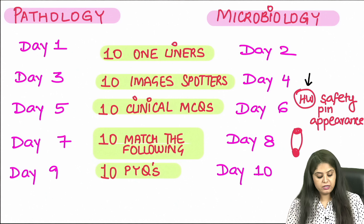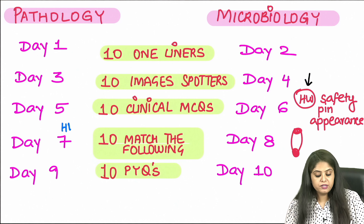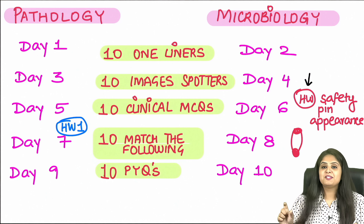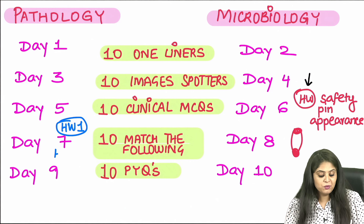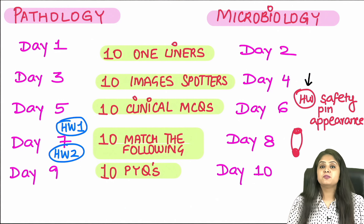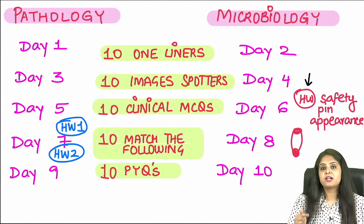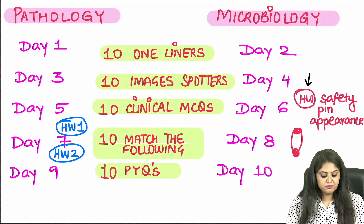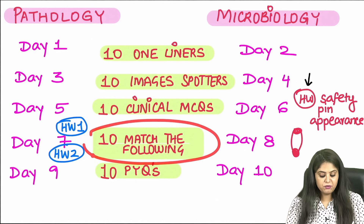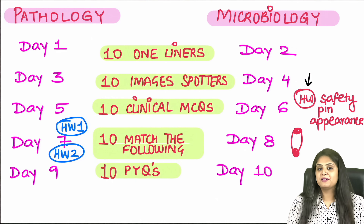Your two homeworks: first, tell me the row-of-tombstones appearance seen in pemphigus vulgaris and the similar appearance seen in a type of necrosis in general pathology. Second, tell me the linear pattern of immunofluorescence and which type of RPGN it is noted in. I'll be waiting for your answers, and I'll meet you tomorrow for another match-the-following quick session in microbiology. Study well!